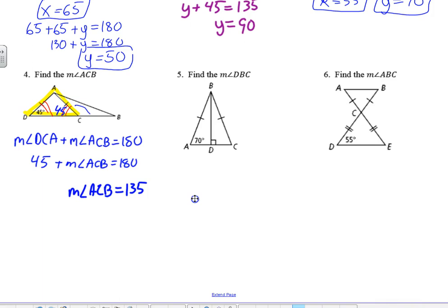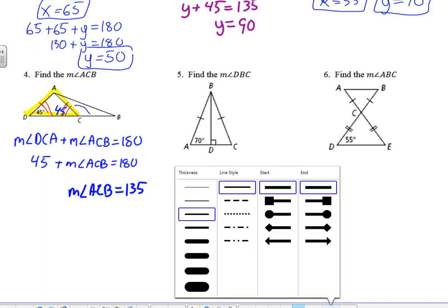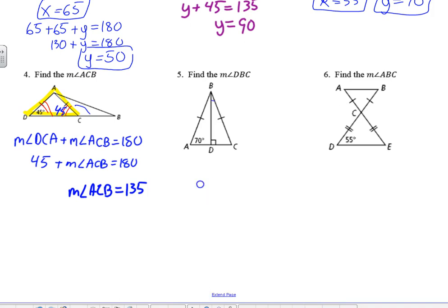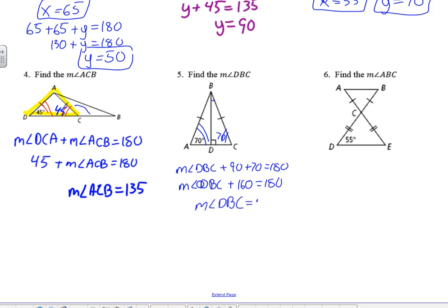For example 5, find the measure of angle DBC. The large triangle is isosceles, so the base angles are congruent, meaning the base angle on the other side is also 70°. Therefore, m∠DBC + 90 + 70 = 180 (Triangle Angle Sum). That gives 160, so m∠DBC = 180 − 160 = 20°.